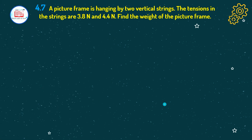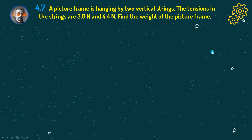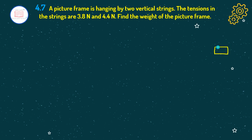The next question is number 7. A picture frame is hanging by two vertical strings. The tensions in the strings are 3.8 N and 4.4 N. Find the weight of the picture frame. We have a picture frame hanging by two vertical strings, and at the two hanging points, two tension forces are generated, which we name T1 and T2.